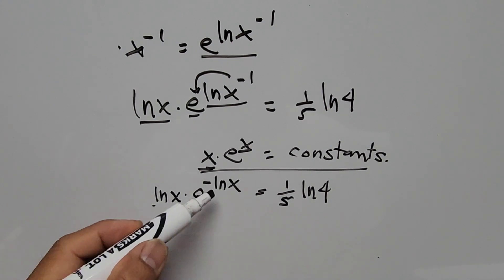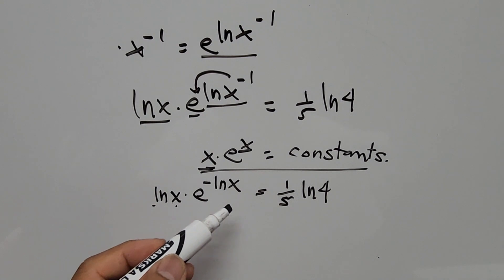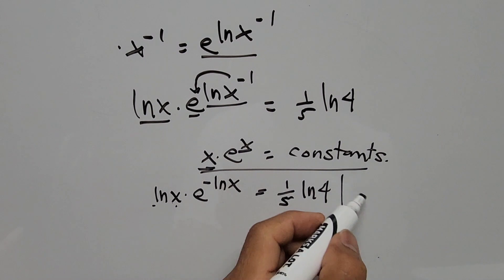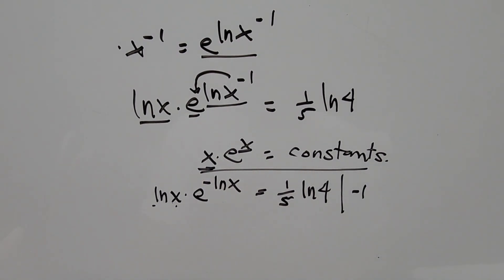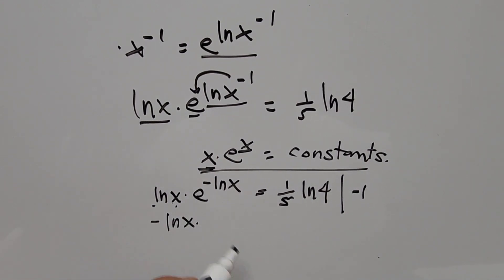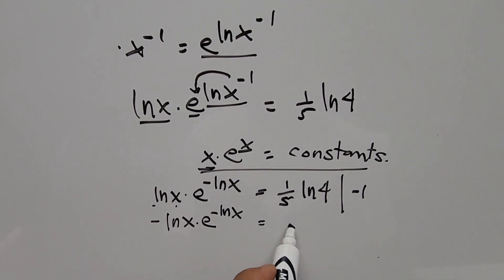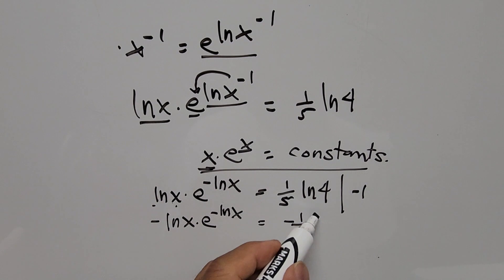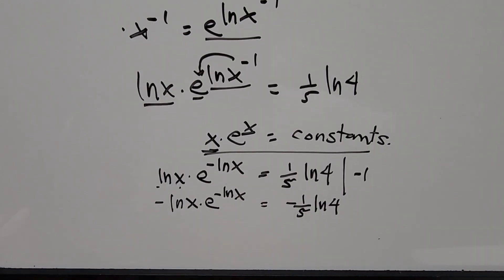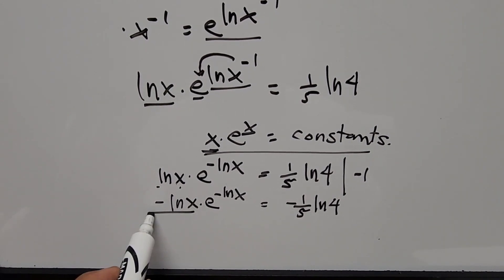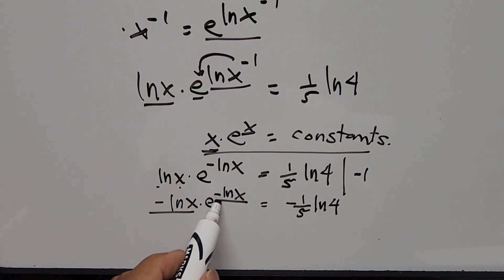To make the base the same as the exponent, we multiply the whole equation by negative 1. This gives us negative ln of x times e to the power of negative ln of x equals negative one-fifth ln of 4. We have now arrived at our desired format, with base negative ln of x and exponent negative ln of x matching.